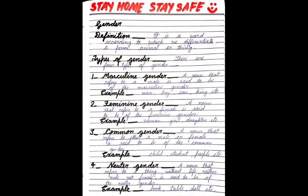Dear students, this is your English class. Today I am going to start gender. Firstly, let's move on to the definition of gender. It is a word according to which we differentiate a person, animal, or thing. This is according to which we get to know the difference between a person, animal, or thing.